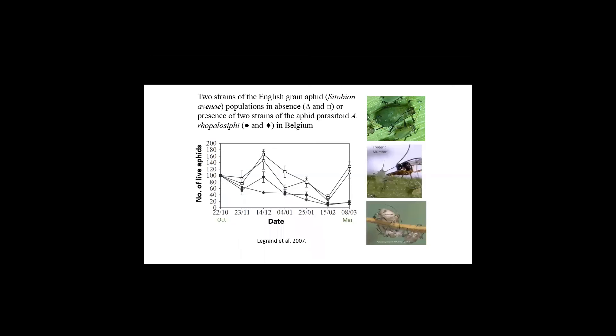And in the literature, there are some examples of that. This is a study that was conducted in Belgium, and it was done from 2001 to 2002. It started in October and finished in March. And on this, they have two strains of aphids. This is the English grain aphid with the long cornicles. And then they have two strains of parasitoids.